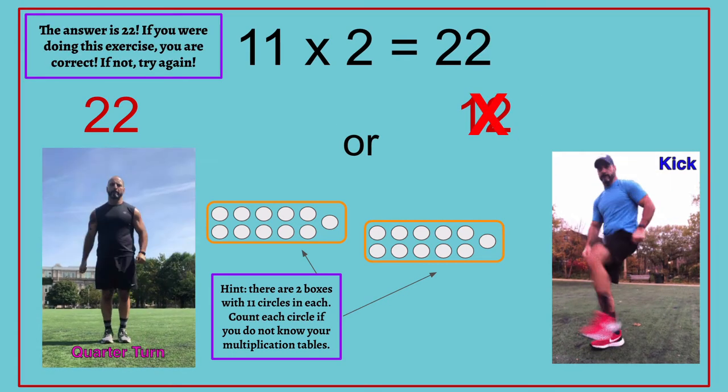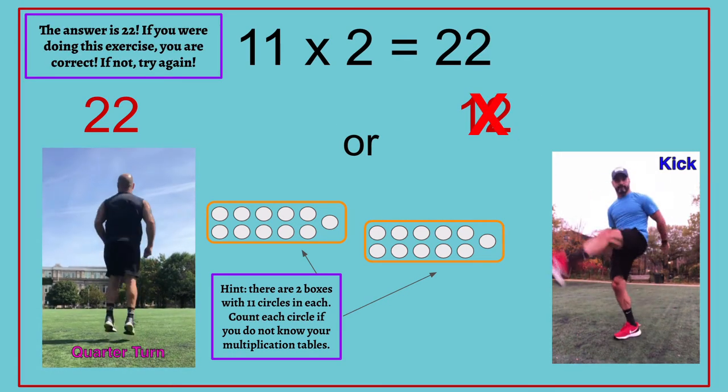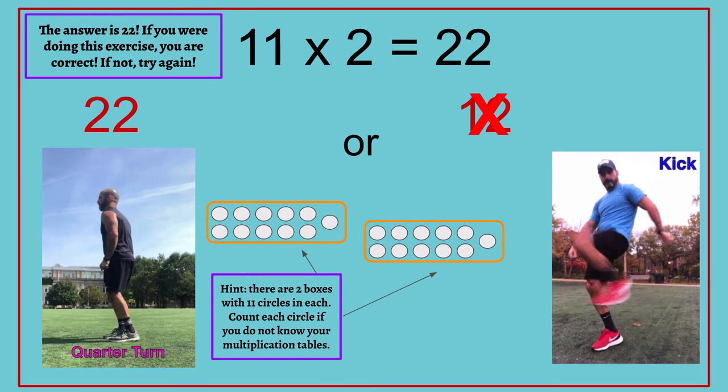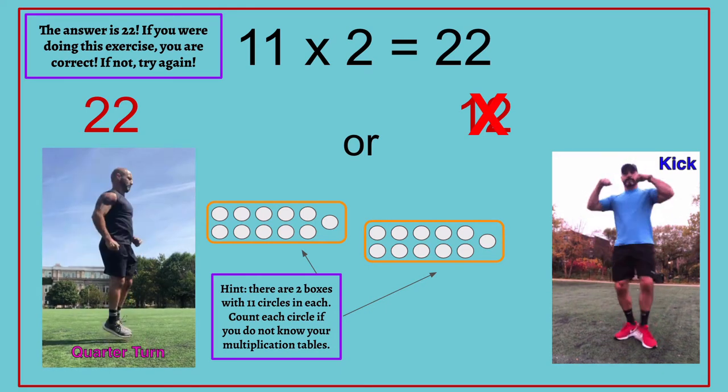The answer is 22. If you were doing this exercise, you were correct. If not, try again. 11 times 2 equals 22.